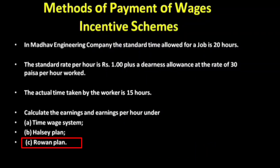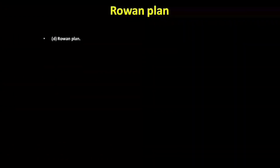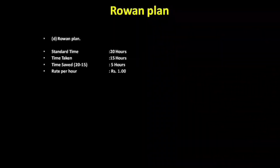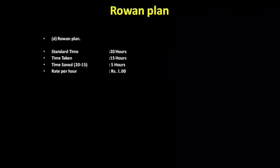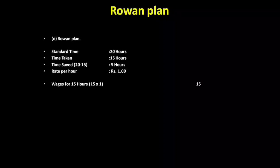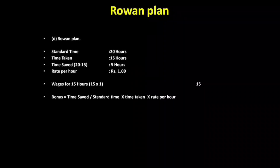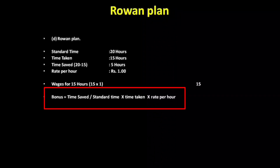The next problem is the Rowan plan. Standard time is 20 hours and time taken is 15 hours, so time saved is 5 hours and rate per hour is 1 rupee. Under the Rowan plan, the bonus formula is: bonus equals time saved divided by standard time, multiplied by time taken, multiplied by rate per hour.